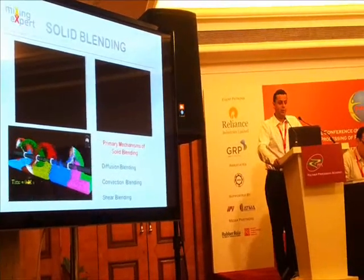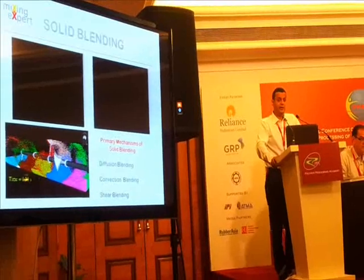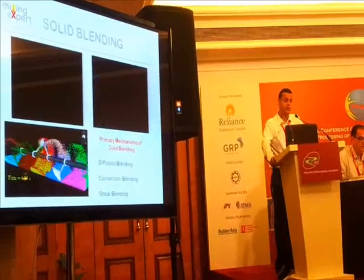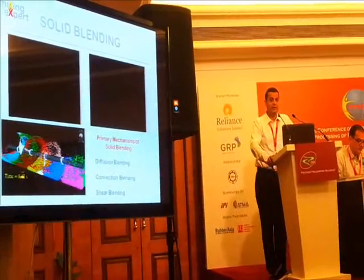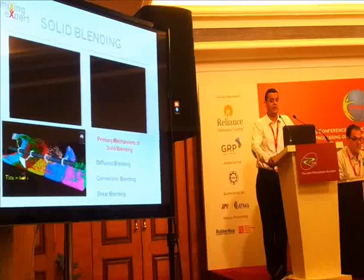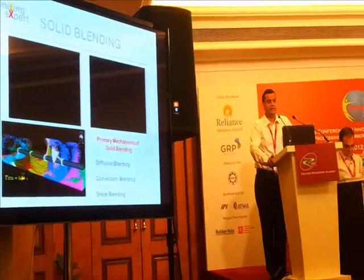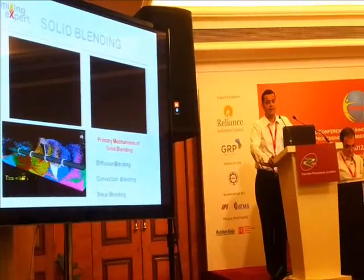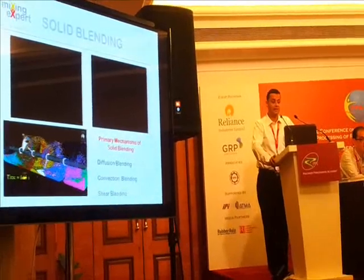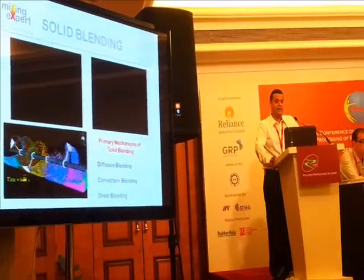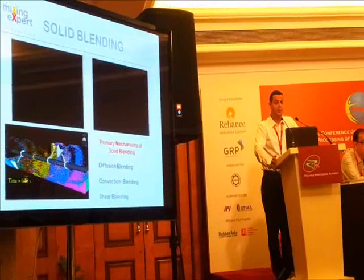The third mechanism is shear. You have substances which might have agglomerates. Breaking down the agglomerates is what happens with shear mixing — you would have high intensifier bars or choppers which disintegrate the lumps, and then in combination with convective mixing you could get a uniform blend.